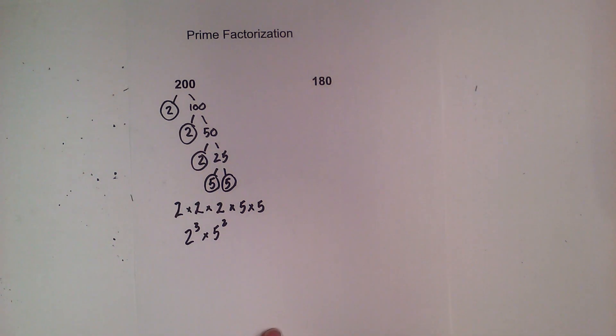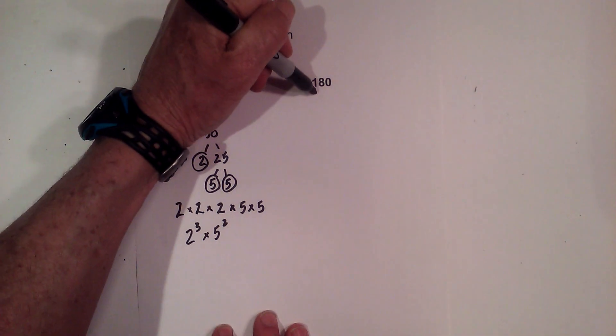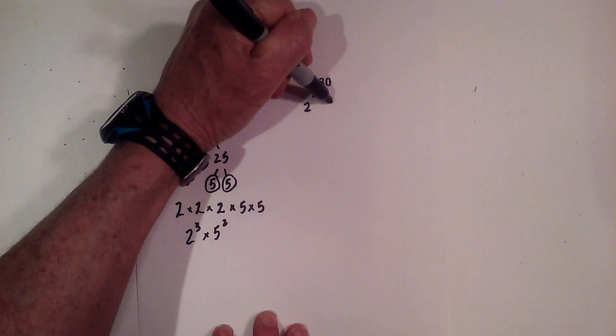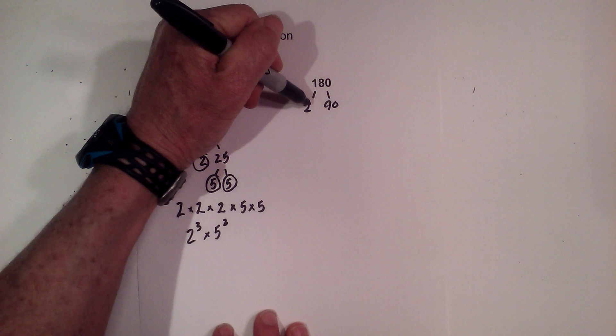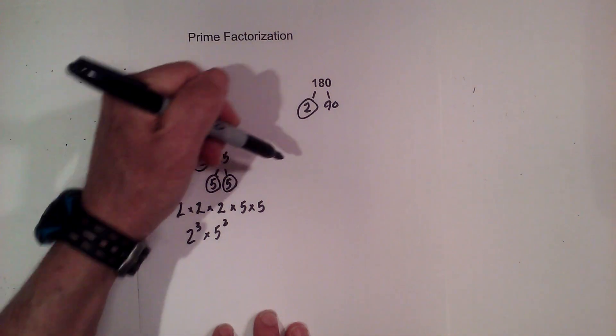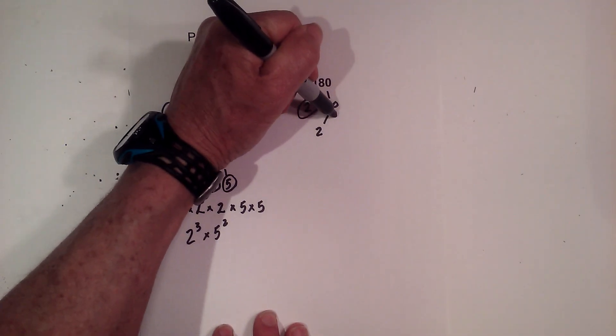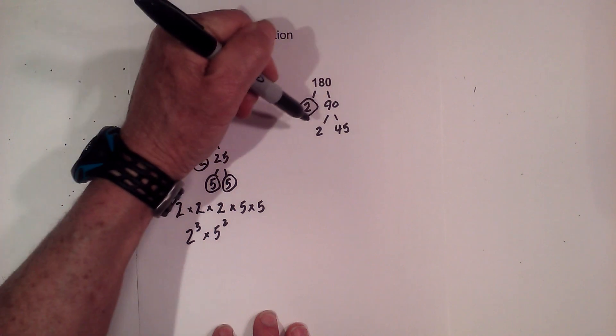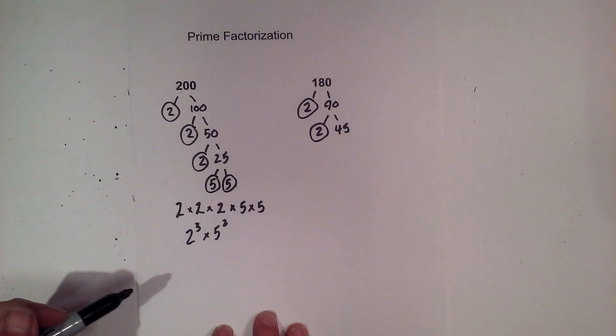Next let's move over to 180. Let's begin with 2 times 90 equals 180. Circle the 2. Next 2 times 45 equals 90. Circle the 2.